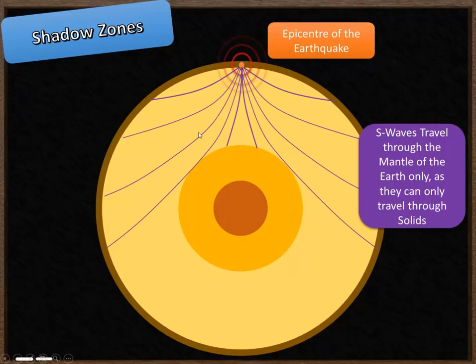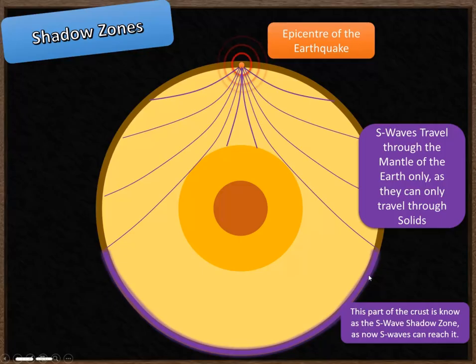You'll notice that they only travel through the mantle. This must mean that the mantle is a solid because S waves can only travel through solids. Therefore, the outer core must be a liquid as the S waves, when they reach the outer core, are stopped. We have part of the Earth down here called the S wave shadow zone. This is an area of the Earth that will not receive any S waves during an earthquake because the S waves are blocked by the outer core of the Earth.